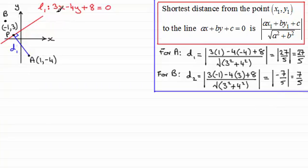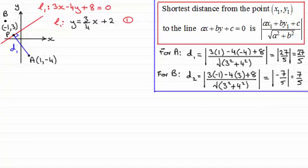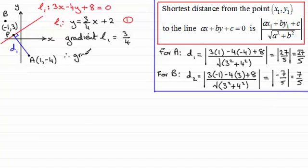I'll call the foot of the perpendicular point P. First, I need the gradient of L1. Rearranging 3x − 4y + 8 = 0 to make y the subject gives y = (3/4)x + 2 — I'll call that equation 1. So the gradient of L1 is 3/4. Using the perpendicular gradient rule — take the reciprocal and negate — the gradient of AP is −4/3.